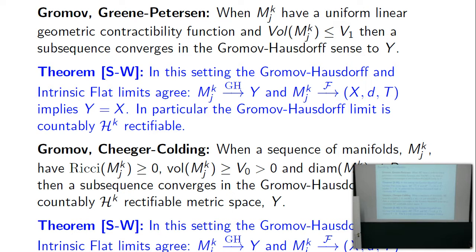Mengi proved there's no uniform geometric contractibility in the Ricci case — so it's not a direct consequence. If you have Ricci bounded below, you can have arbitrarily small tiny holes; Mengi's examples are four-dimensional. But even so, we show the intrinsic flat and Gromov-Hausdorff limits agree in the Ricci case.